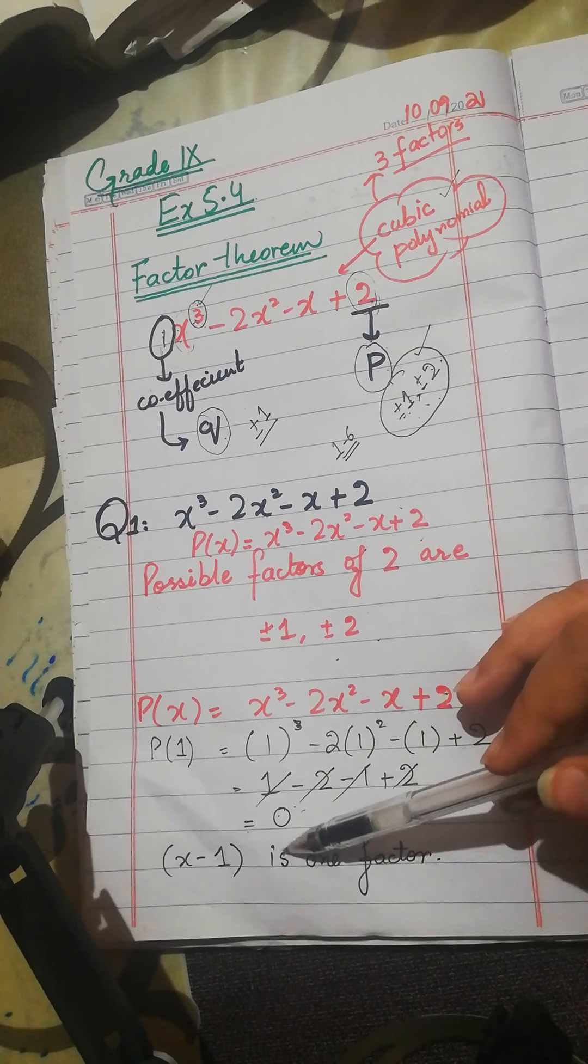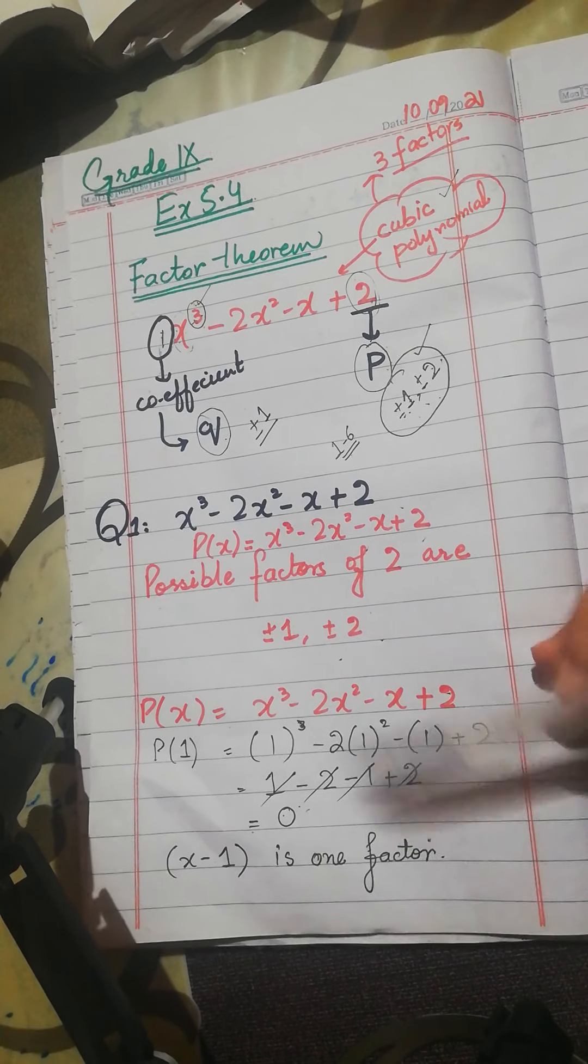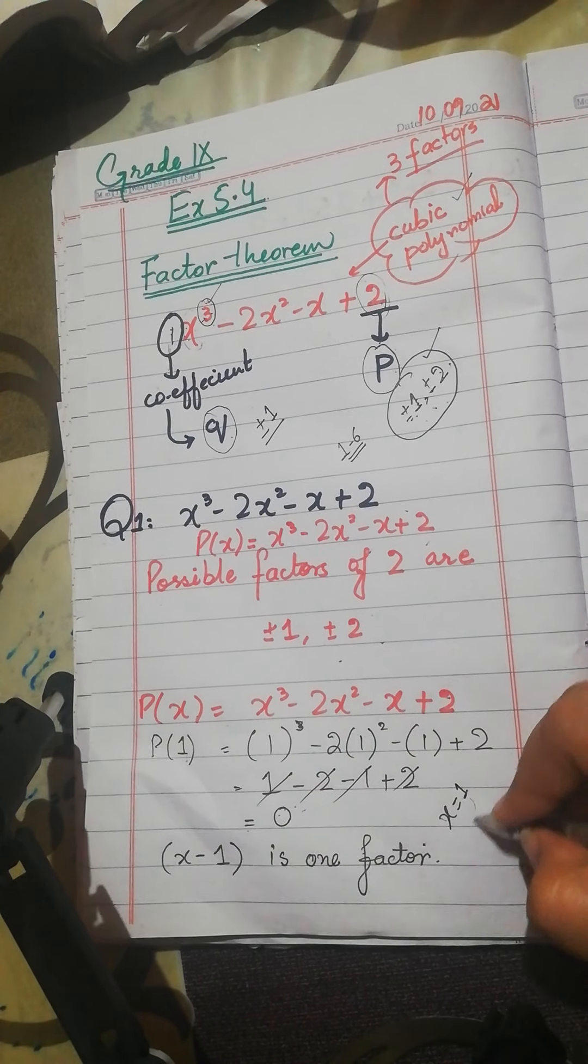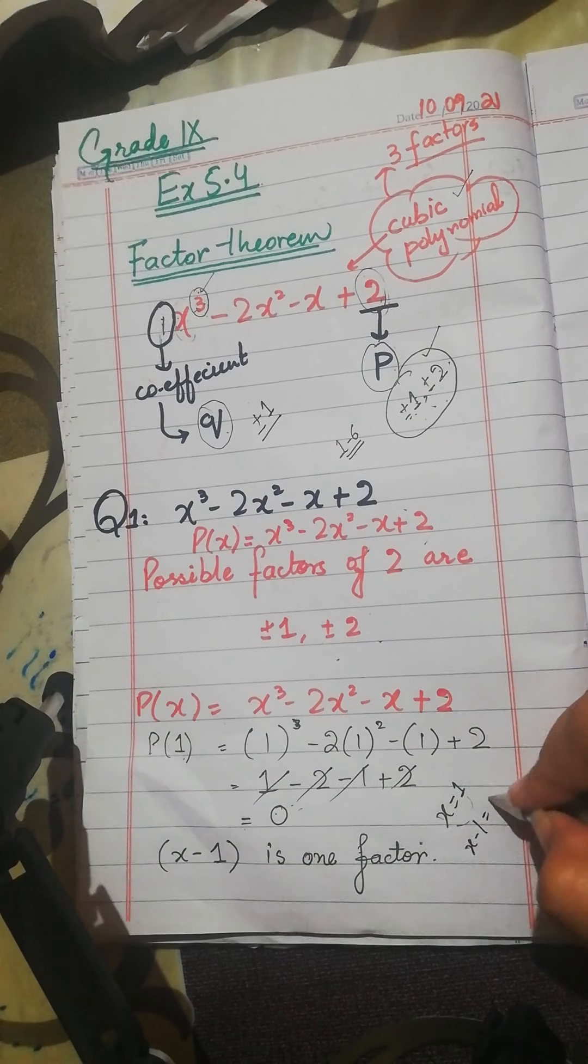We will tell you that x minus 1 is a factor. Okay? Actually, it happens that x is equal to 1. We have to keep here. So, here it comes. x minus 1 is equal to 0.